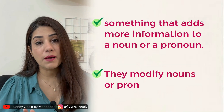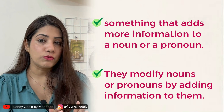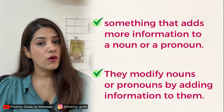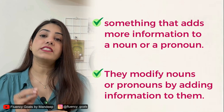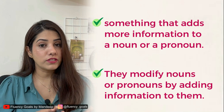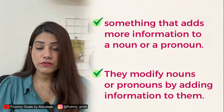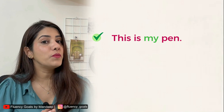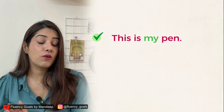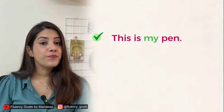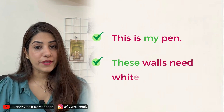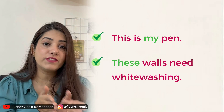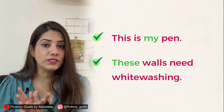Adjectives add more information to a noun or pronoun — they modify the nouns. For example: 'This is my pen.' Here 'my' is an adjective giving you more information about the pen. Similarly, in the sentence 'These walls need whitewashing,' the adjective 'these' is adding some information to walls.